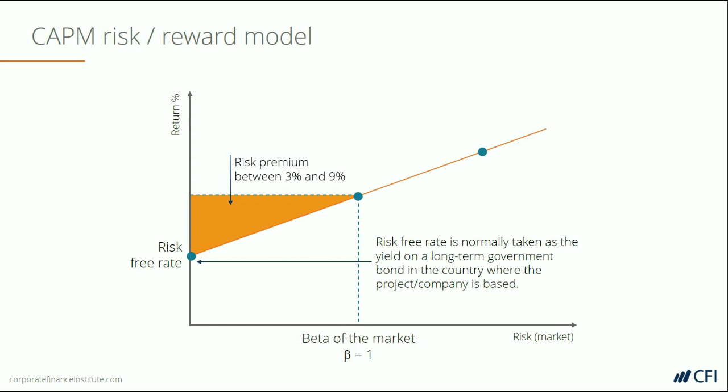We could then go further along the line to a data point where we have a beta of 2 — twice as volatile as the market. We can then see the corresponding rate of return on the vertical axis, which is higher than the rate of return for a stock with the same beta as the market, which was that middle data point.